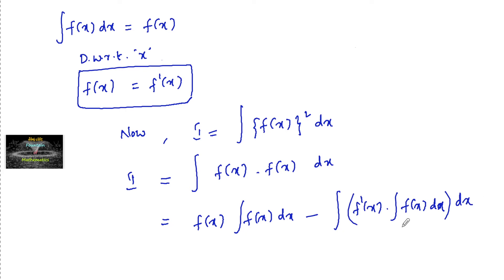Again dx, which is equal to f into integral f. Since integral f is the same as f, I can write the same f minus integral of f prime, which is nothing but f into integration of f dx is f dx. This is i.